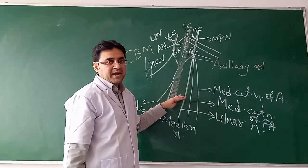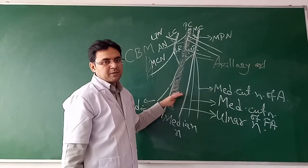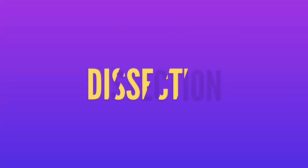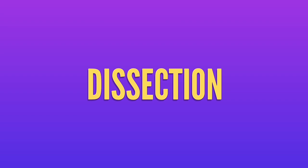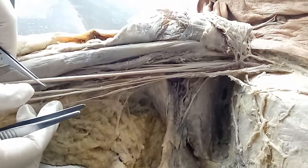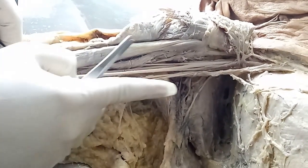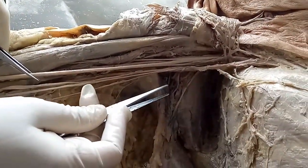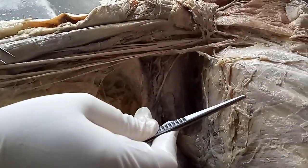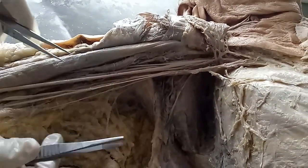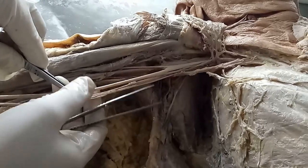So in this way we can find and identify the different branches of the brachial plexus. This is the dissection of the axilla, situated between the chest wall and the upper arm, in which you can see the brachial plexus. This is the axillary artery, and medial to it lies the axillary vein.